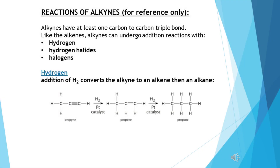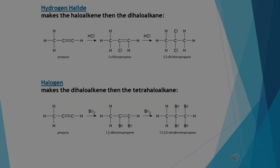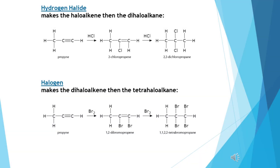The alkynes, because they are also unsaturated, can undergo addition reactions. Firstly, the triple bond breaks to a double bond, and if there's further reaction, the double bond breaks to a single bond. As shown in the mechanism, propyne becoming propene, then becoming propane on addition with hydrogen. Here are some other examples of addition reactions of alkynes.